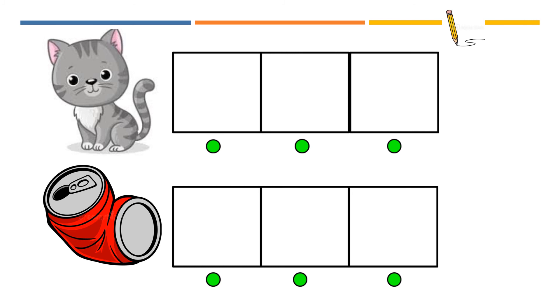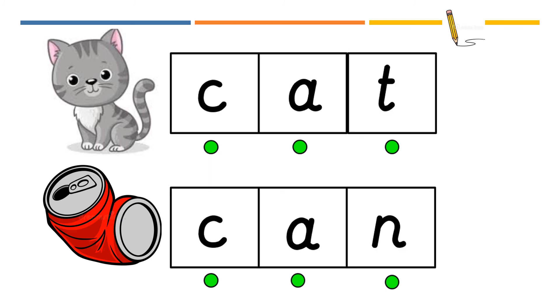We are going to check our spelling of these words now. If you are not quite ready, just click pause and click play once you are ready. Can you tick or fix your spelling of cat and can? Can you point to the things that are the same? They also have some things which are different. Can you point to the letters which are different in each word?